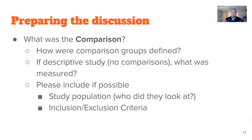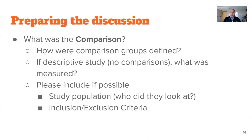The other thing I want people to cover in primary discussions is: what was the comparison? What were the comparison groups defined? Was there a placebo-controlled group? What was the intervention group? If it's a descriptive study with no comparisons, what exactly was measured? If possible, include the study population — who did they look at? That's how we decide what's applicable to our patients. And what are the inclusion and exclusion criteria? These are the important parts to present in those five slides.